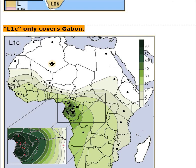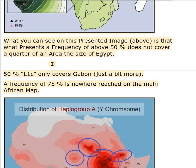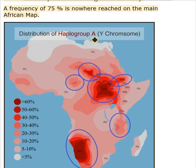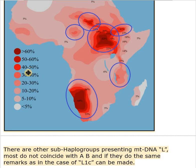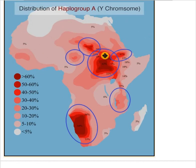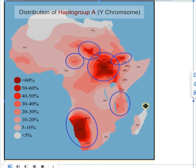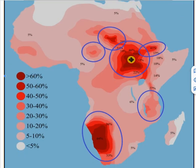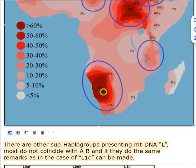This is YDNA haplogroup A. Its presence above 50% is very limited — this doesn't even come close to 10% of Africa. There is 26% only in a small area something like the size of Gabon or a quarter of Egypt. At 64%, it comes close to the size of Egypt.